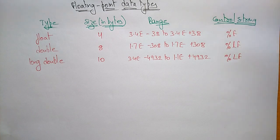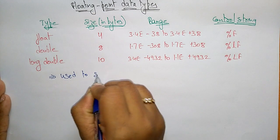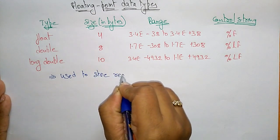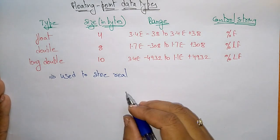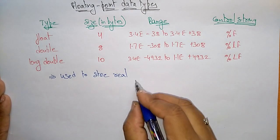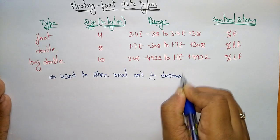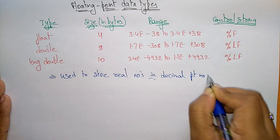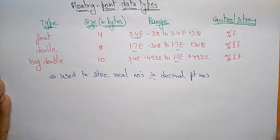Now let us see the floating point data type. This floating point data type is mainly used to store real numbers, whereas the integer data type is used to store whole numbers. The floating point data type is used to store real numbers, that is decimal point numbers. That's why we represent ranges like 3.5, 1.7 exponential, 3.4e, 1.1e exponential like that.